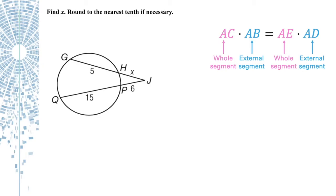So we need to find X. We're going to take the whole segment, 5 plus X, times the external part, X. And then on the other side, 15 plus 6, that's the whole segment, times just the external segment of 6. And now we can solve for X. X squared plus 5X equals 126. Now we're going to subtract 126 from both sides to get a quadratic. Remember back from algebra 1 how to factor these.